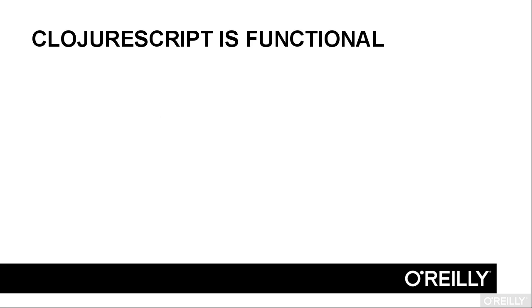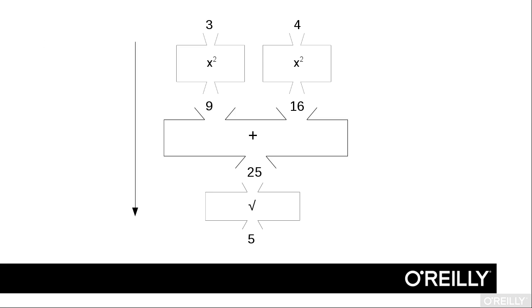The ClojureScript language is a functional programming language. Instead of describing an algorithm as a set of steps to be carried out, ClojureScript describes functions that take input data and transform it to output. By putting these functions together, you get the desired results. Think of it as a pipeline or a conveyor belt where you send parts to be transformed and modified until you end up with a finished product.